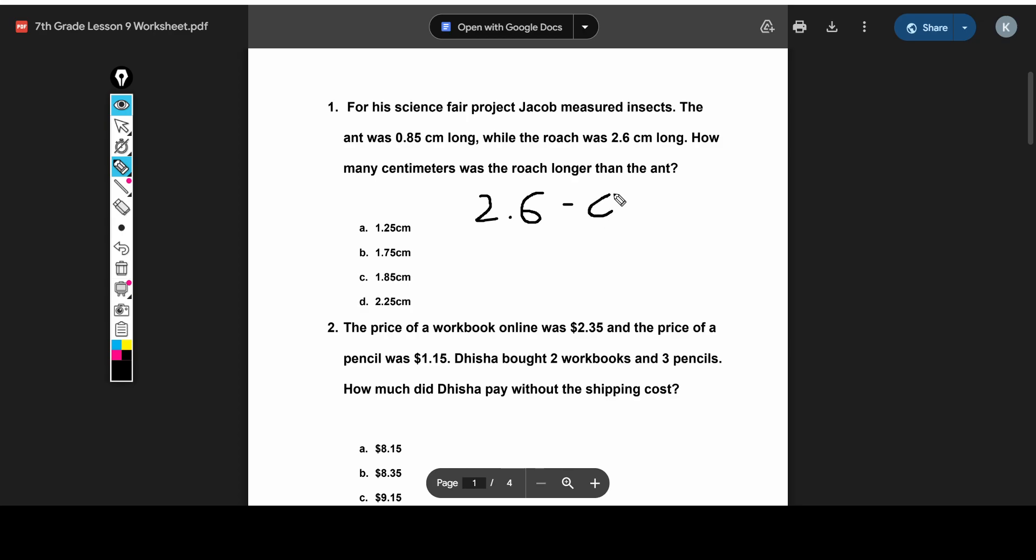So we did 2.6 minus 0.85. And now 2.6 is the same as 2.60. So we're going to put them vertically on top of each other, like this. And we add in the extra zero. It's not even a placeholder, but it's there to make it so these line up nicely, so we can subtract. So we just do normal subtraction. So this becomes a 10 as we carry over this 1. We borrow a 1 from that. 10 minus 5 equals 5. And then we just continue on with the normal subtraction. So we end up with 1.75, so that's B.